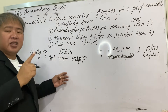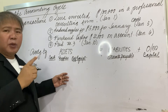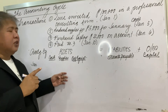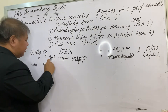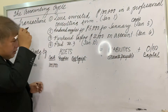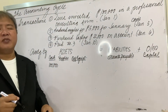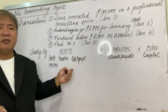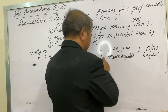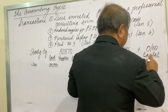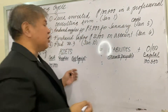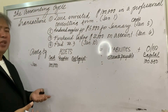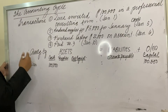Cash increased by 100,000. Now, what is the effect on the other side of the equation? This was an investment, so it causes an increase in capital. Therefore, capital also increases by 100,000. Looking at our accounting equation, assets still equals liabilities plus equity. That is how we analyze the first transaction.